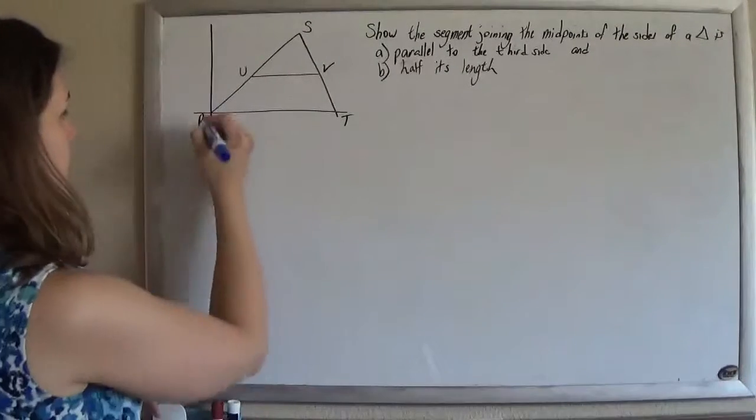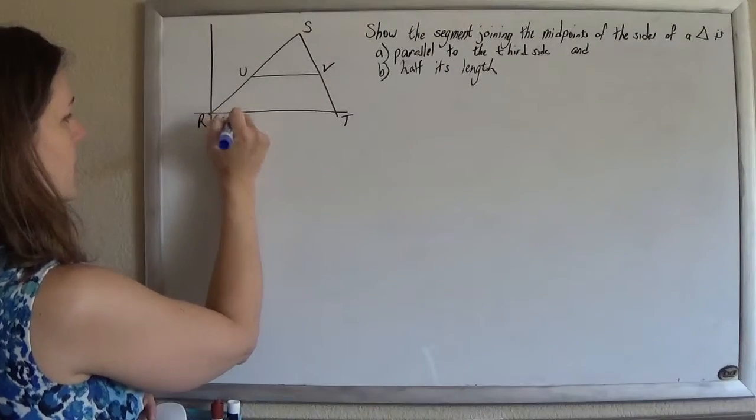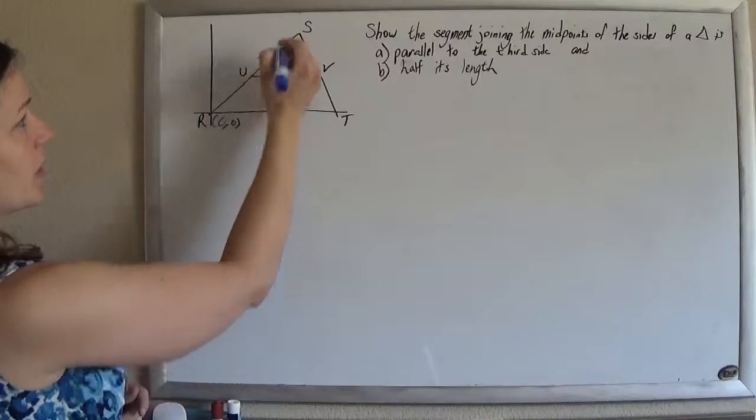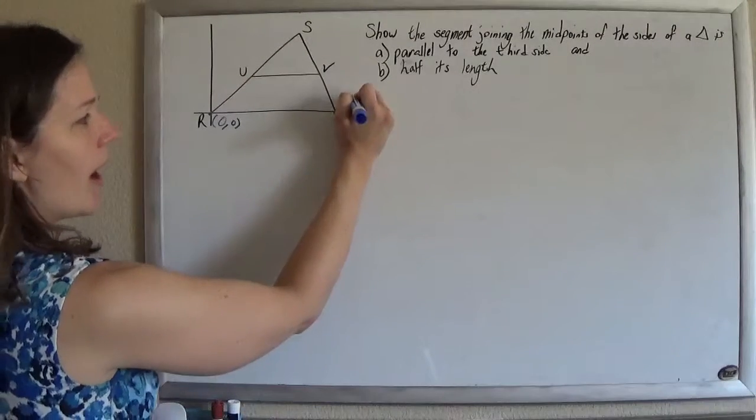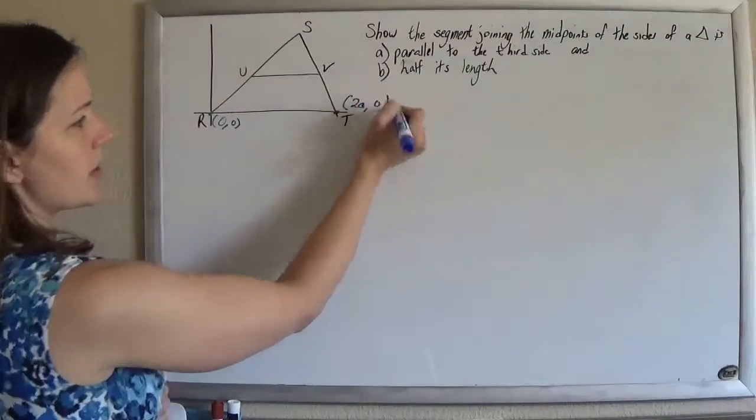Okay, so we're going to give these some points. So this is 0, 0, nice and at the origin. And then this point here, it could be anywhere, I'm going to call it 2a, 0.